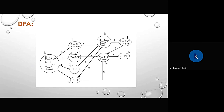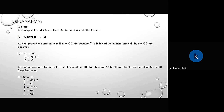For the DFA with eight states, the first state I0 is computed by adding the augmented production and computing the closure. Since the dot is followed by non-terminals, we add all productions starting with E, T, and F. So I0 = closure({S' → •E}) = { S' → •E, E → •E+T, E → •T, T → •T*F, T → •F, F → •id }.